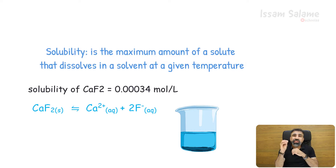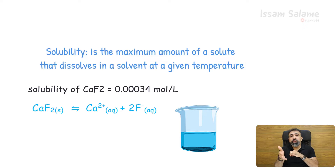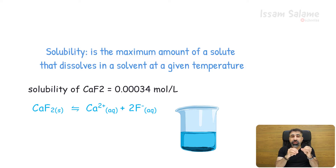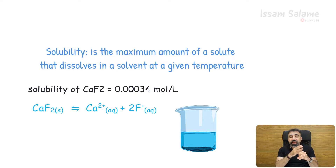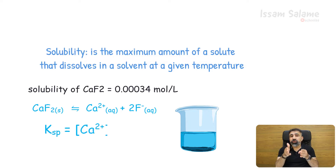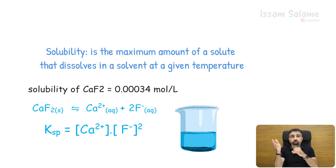Here we are dealing with a slightly soluble salt — calcium fluoride — and all the salts in this lesson are slightly soluble salts. When dealing with a slightly soluble salt, we replace the equilibrium constant with Ksp, the solubility product constant, which in this case equals the concentration of calcium ions multiplied by the concentration of fluoride ions squared.